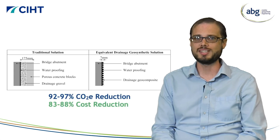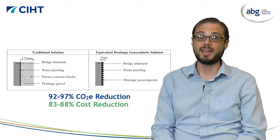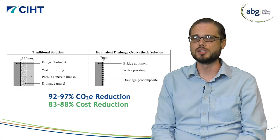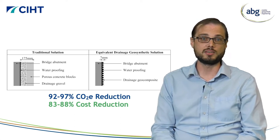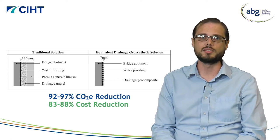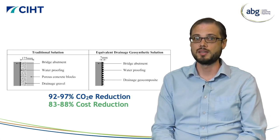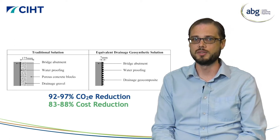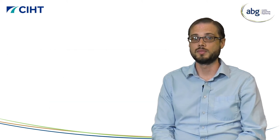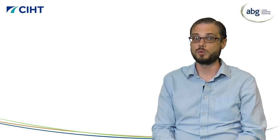This reduced CO2 emissions by a staggering 92 to 97 percent depending on whether you are comparing it to the concrete blocks and gravel or the no fines concrete, and reduced costs by 83 to 88 percent. The main reason for the seemingly unbelievable reduction in CO2 emissions is twofold. Firstly, the embodied carbon of 60 kilograms of drainage composite compared with 18,000 kilograms of hollow concrete blocks and drainage gravel, or 28,000 kilograms of no fines concrete. On a per abutment scale this makes a huge difference. Second is the carbon footprint from emissions during transportation — one truckload of drainage geocomposite is roughly equivalent to 300 truckloads of drainage gravel. And there's the 83 to 88 percent reduction in cost between the traditional solutions and the drainage geocomposite that provides equivalent drainage performance.